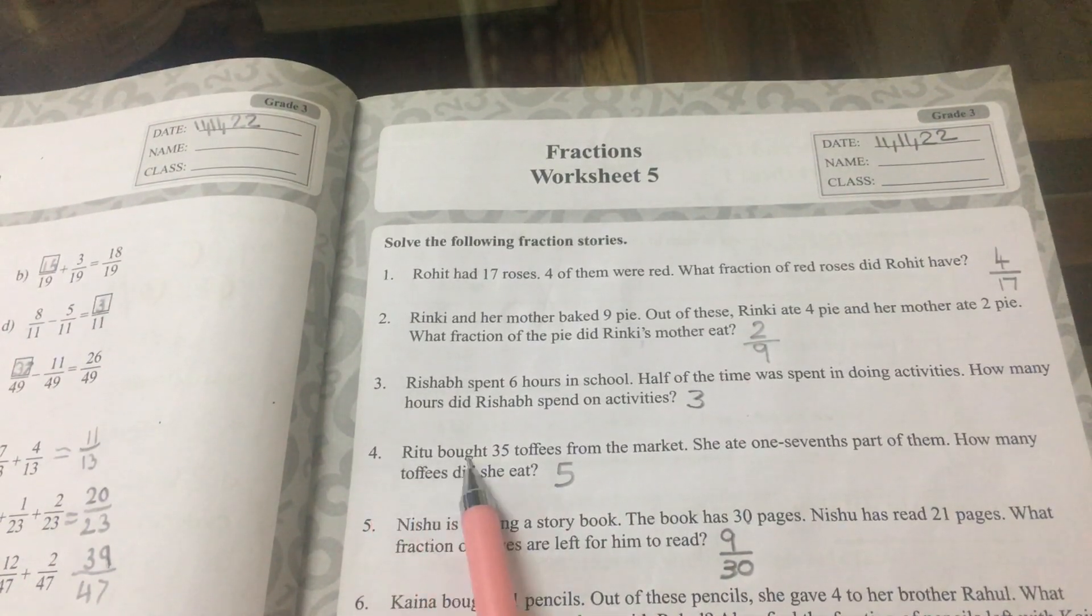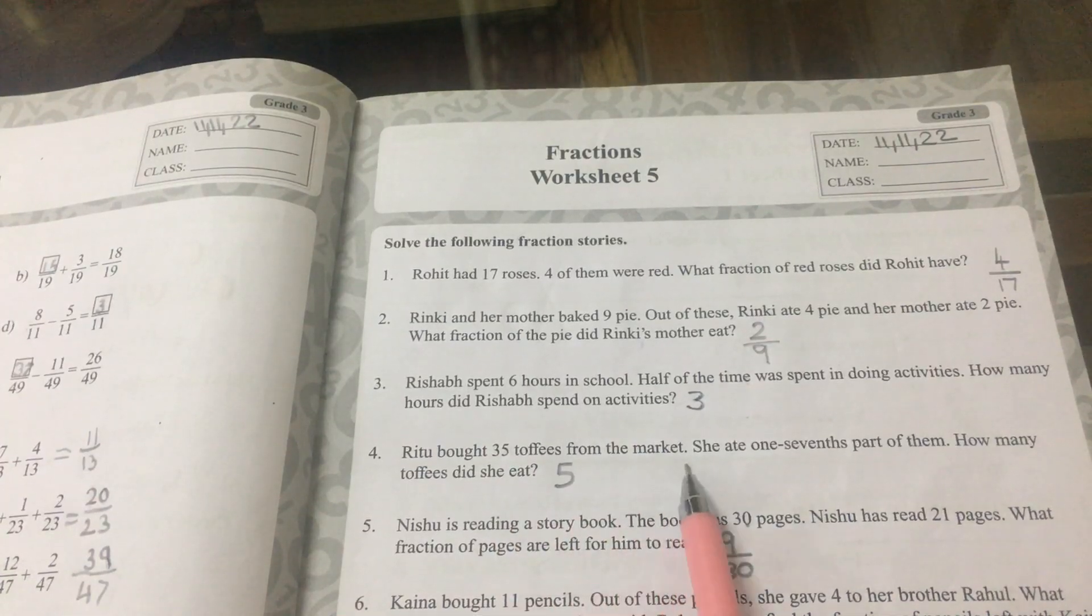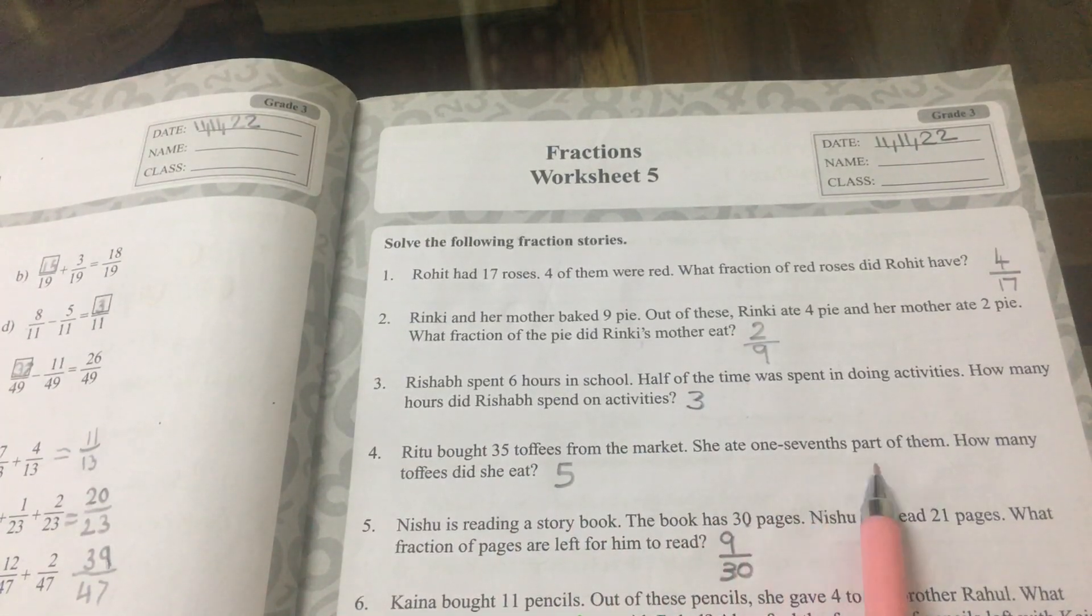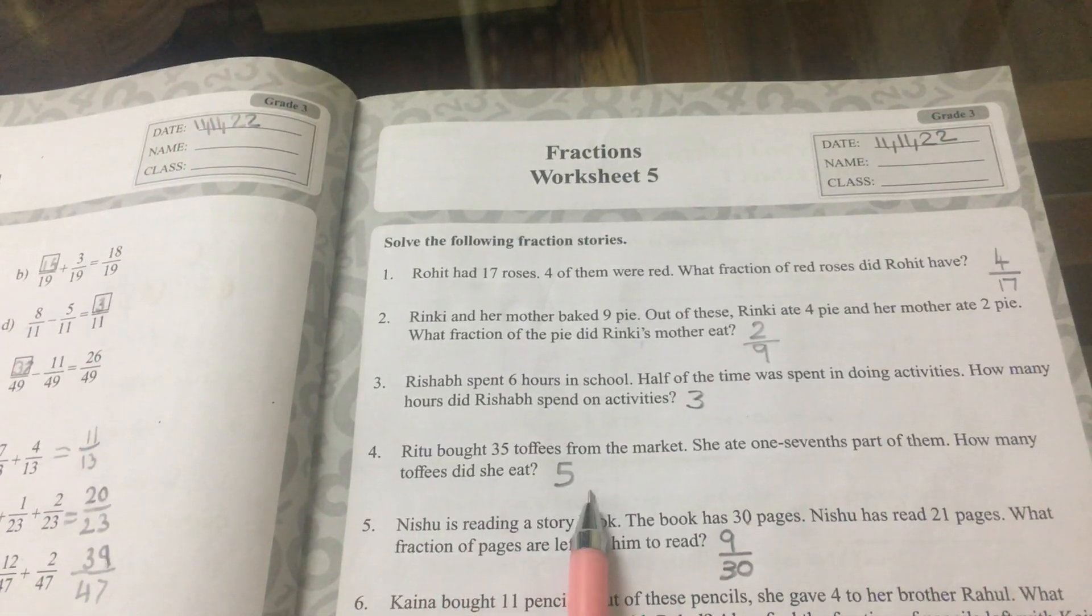Number 4. Ritu brought 35 toffees from the market. She ate 1 seventh part of them. How many toffees did she eat? The answer is equal to 5.